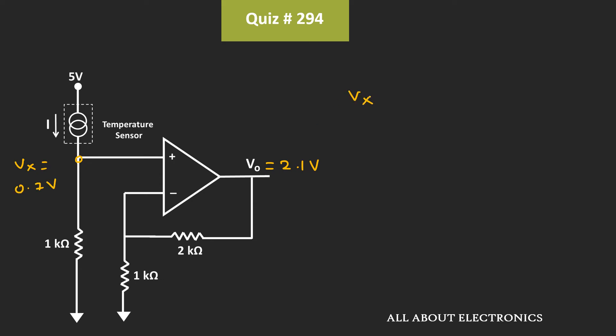And this Vx can be given as I times 1 kΩ. That means, 0.7 V is equal to I times 1 kΩ. Or, we can say that, this current I is equal to 0.7 V divided by 1 kΩ. That is equal to 700 μA.